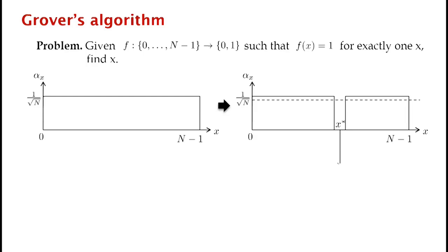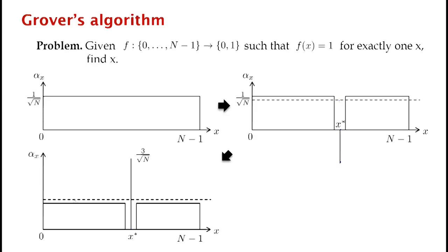Now we do an inversion about the mean. The mean would have been 1 over square root n if we hadn't done the phase inversion. The phase inversion lowers the mean just a little bit. When we invert about the mean, everything except x* drops in amplitude slightly. But x* gets flipped up — it was below the mean by about 2 over square root n, so it goes up by about 2 over square root n above the mean, which was approximately 1 over square root n. So x* gets its amplitude increased by about 2 over square root n in these two steps.